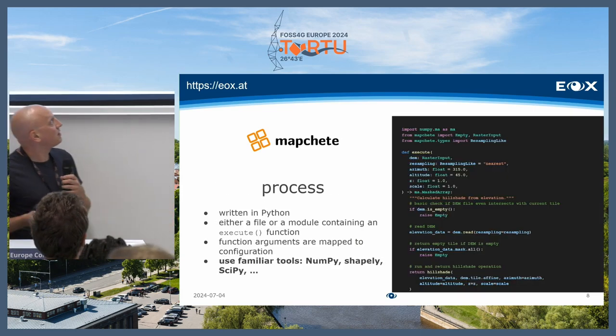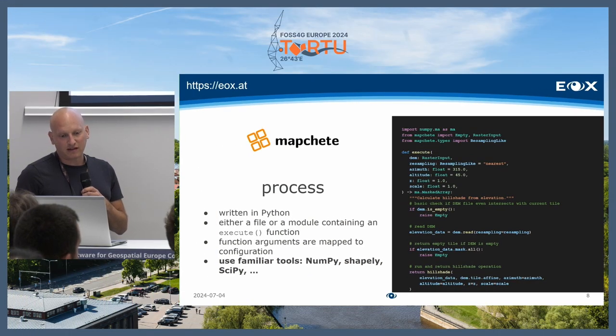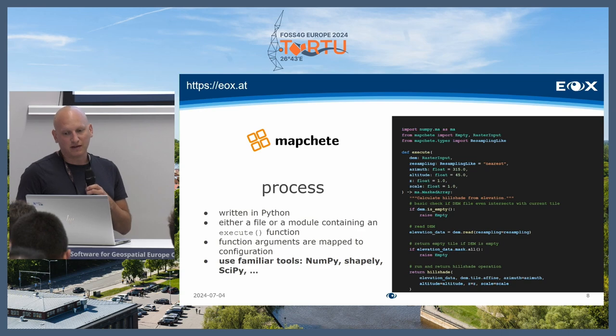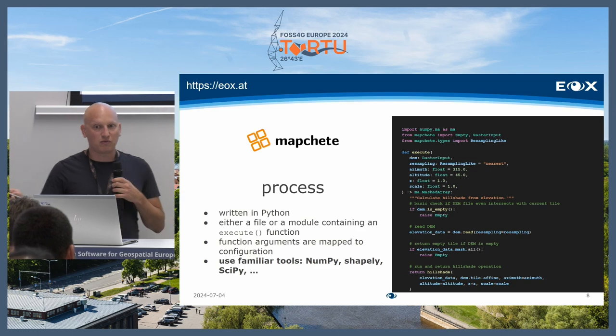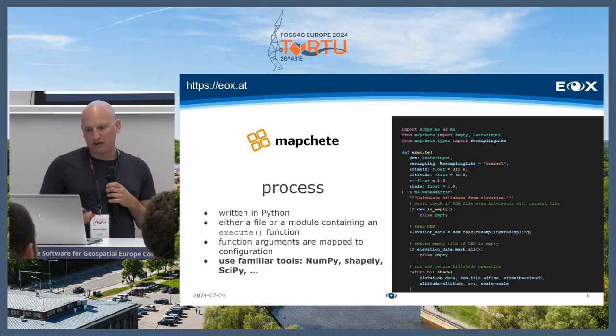How does a process look like? It should be written in Python, and it can be either a Python file or a module. The only constraint is it has to have a function called execute. This execute function should have some input arguments and keyword arguments. Mapchete uses the configuration to map whatever you define to your processing function. Within the function, you can do whatever you want — use familiar tools like NumPy for raster data or Shapely for vector data.